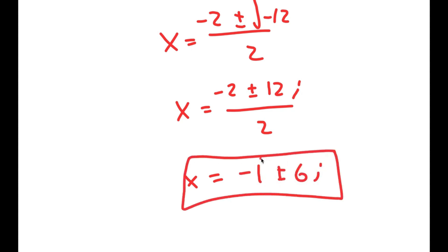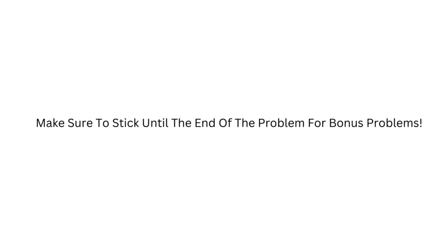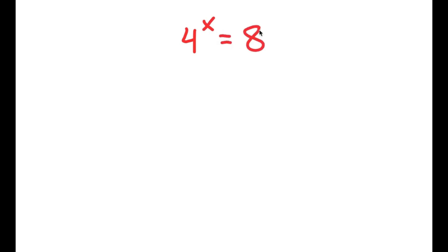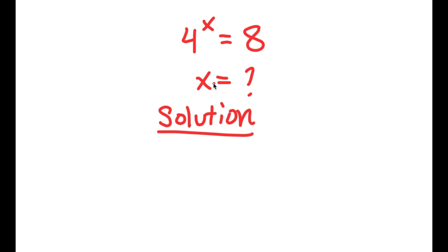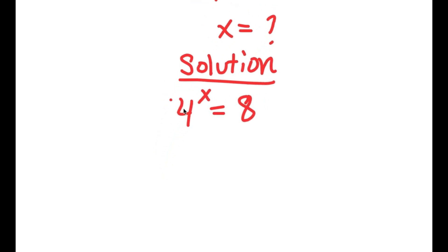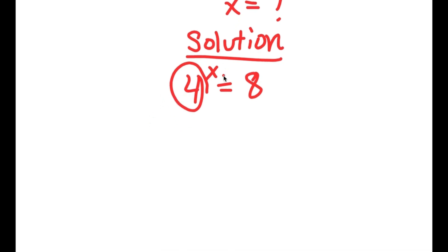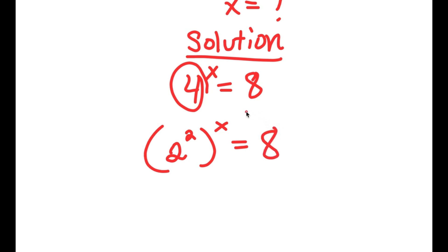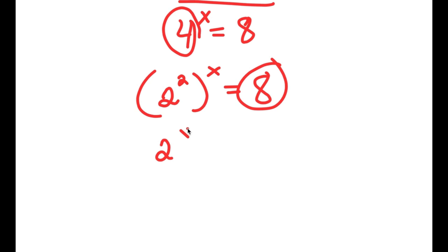So these are the two more solutions to this equation. Now in this problem, I have 4 to the power of x is equal to 8. So obviously here, I want to find the value of x. First, start by rewriting the problem: 4 to the power of x is equal to 8. Now 4 is the same thing as 2 squared, so I'm going to rewrite this as 2 squared to the power of x. And 8 is the same thing as 2 to the power of 3, so I'm going to replace 8 with 2 to the power of 3. So I have 2 squared to the power of x is equal to 2 to the power of 3.